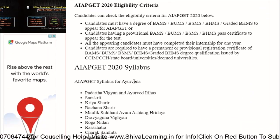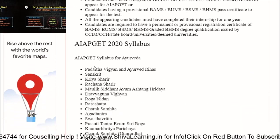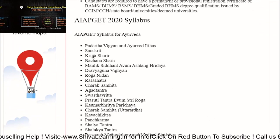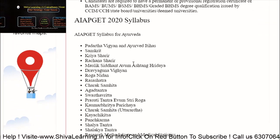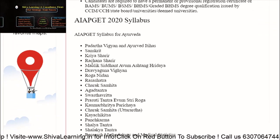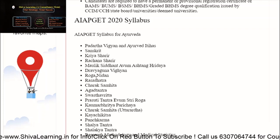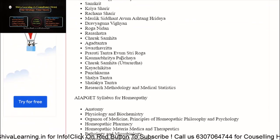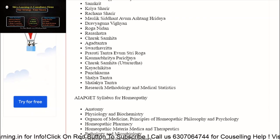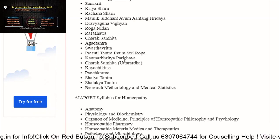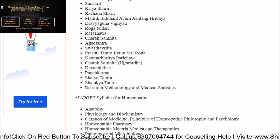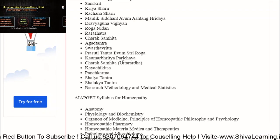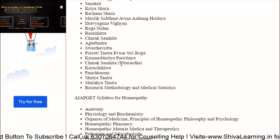If you are looking for the syllabus, the AIAPGT syllabus for Ayurveda includes subjects like Vigyan, Ayurveda Itayasana, Sanskrit, Kariya, Sariya, Rachana, Sharir, Roga Nidan, and more. You can visit our website for the full list — I will put the link in the description of this video.